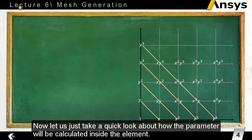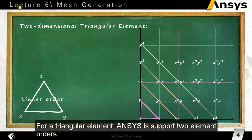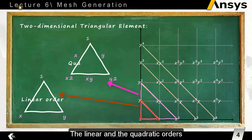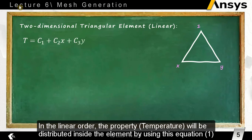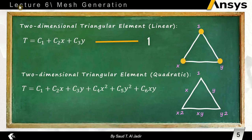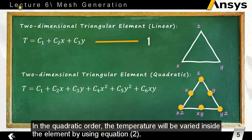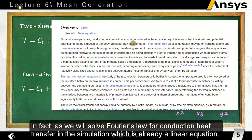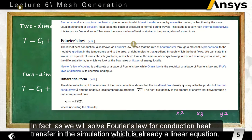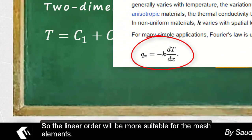Let us take a quick look at how the parameter will be calculated inside the element. For triangular elements, it supports two element orders: the linear and the quadratic orders. In the linear order, the temperature will be distributed inside the element using equation one. In the quadratic order, the temperature will be evaluated using equation two. Increasing the order increases the complexity of the solution, but it is not really related to accuracy. Since we will solve Fourier's law for conduction heat transfer, which is already a linear equation, the linear order will be more suitable for the mesh elements.